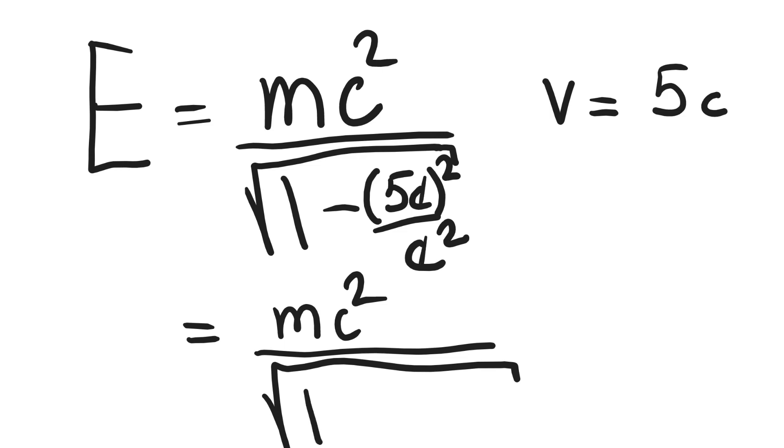We can cancel out the factors of c² which is going to leave us with mc² over the square root of one minus 25.